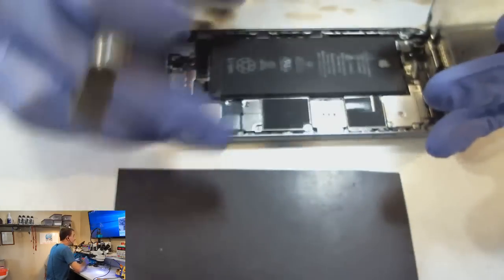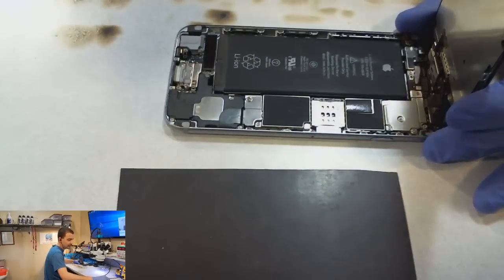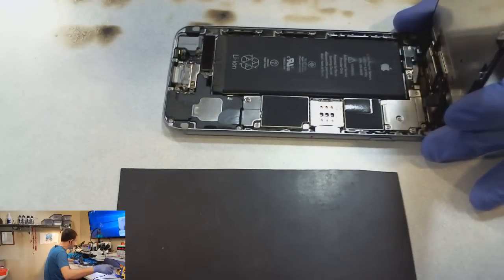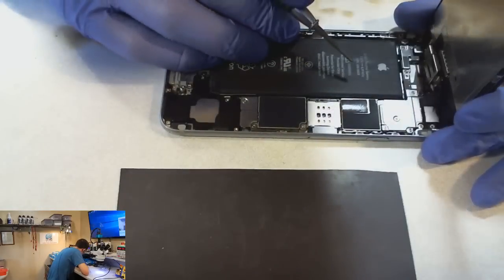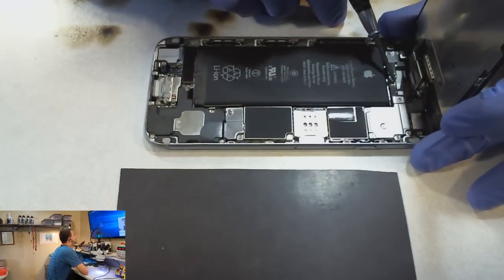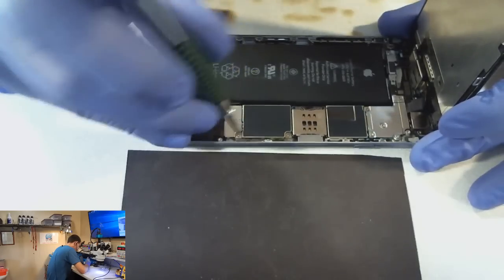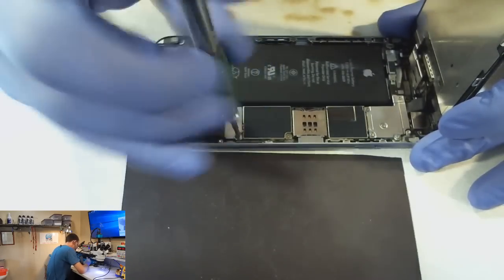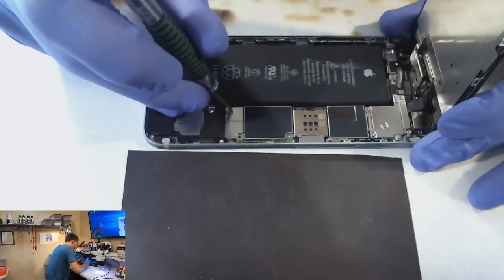All right, let's see if we've got any surprises here behind door number one. I do see a triggered water damage indicator. Let's go ahead and check behind door number two and number three.